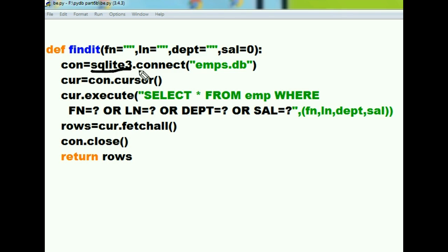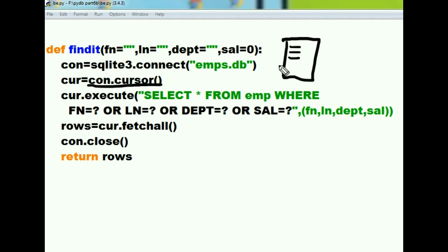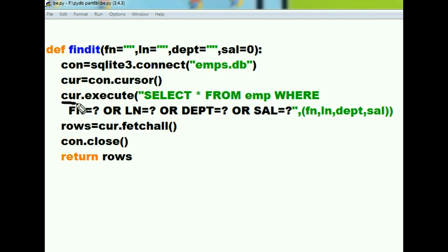The first thing that happens is we tell SQLite3 to connect to the msna database. SQLite3 confirms the connection and assigns it to the variable con. Then con creates the cursor — the scratch pad where the system writes all its records — and assigns it to the variable cur.